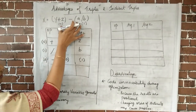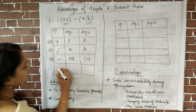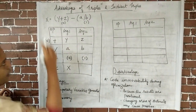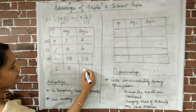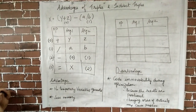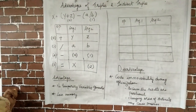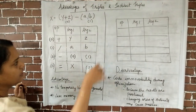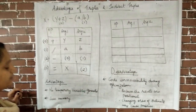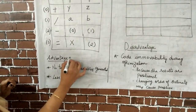Next we assign the value computed at position 2 to variable x. The operator is the assignment operator. When writing triples, argument 1 is the variable being assigned — that is x — and argument 2 is position 2. The advantage of triples is that no temporary variables are generated, since there is no field for them. Therefore triples require less memory compared to quadruples.